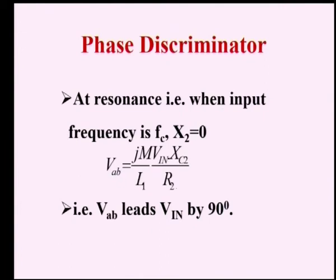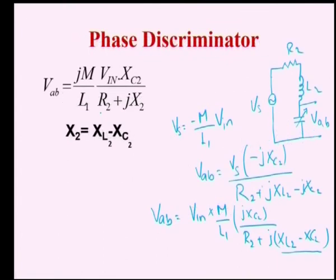From this output expression, when the input signal is purely at Fc, X_L2 minus X_C2 becomes 0 because at the resonant or center frequency these two are equal. So X2 becomes 0, leaving only R2 in the denominator. At center frequency Fc, the resultant expression becomes V_AB equals j(M/L1) × V_in × X_C2 divided by R2.